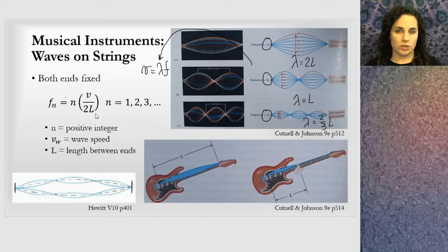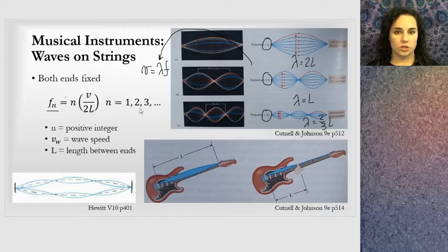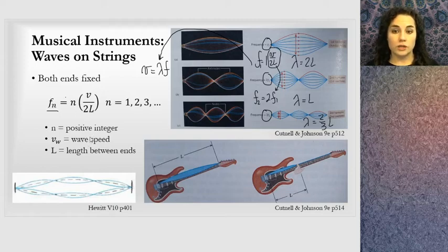It's not a magical equation you have to memorize — it should make sense. Each harmonic frequency depends on n × (v / 2L), where n is a positive integer. So f₁ = 1 × v/2L, and the second harmonic f₂ = 2 × v/2L = 2f₁. This equation is specifically for waves on strings — guitar, banjo, ukulele, cello, violin — anything with a string attached at both fixed ends.